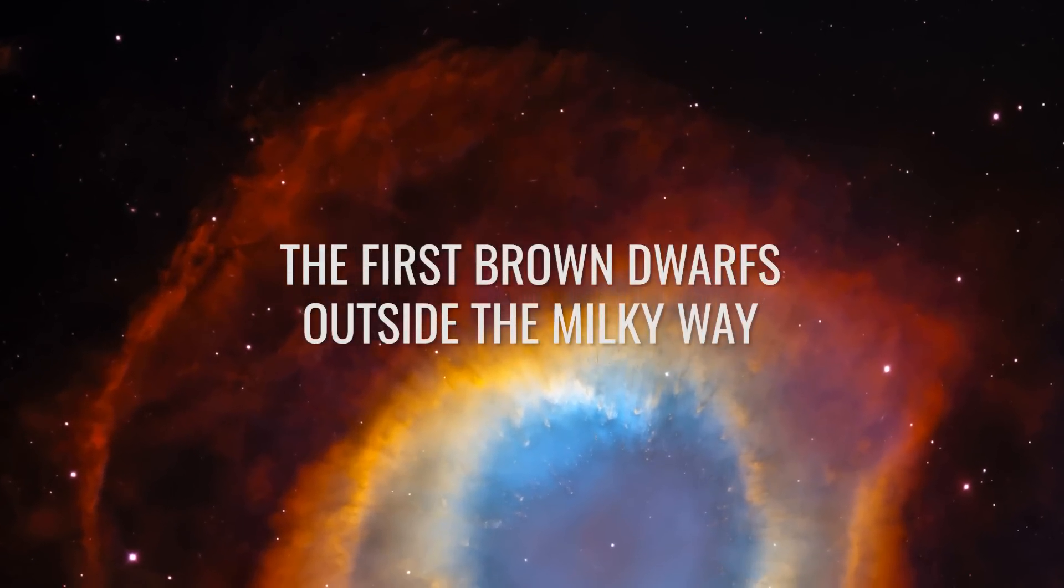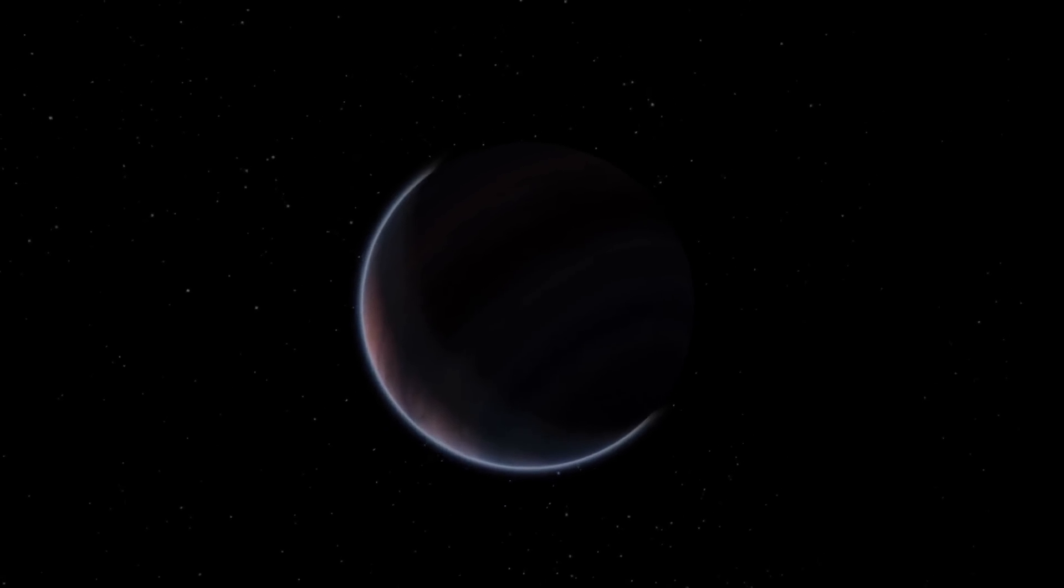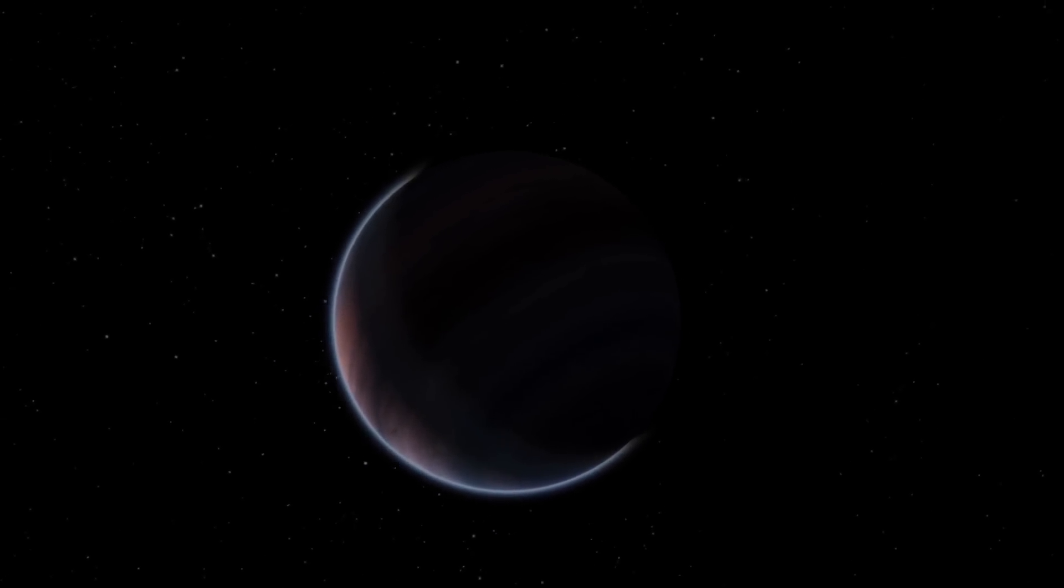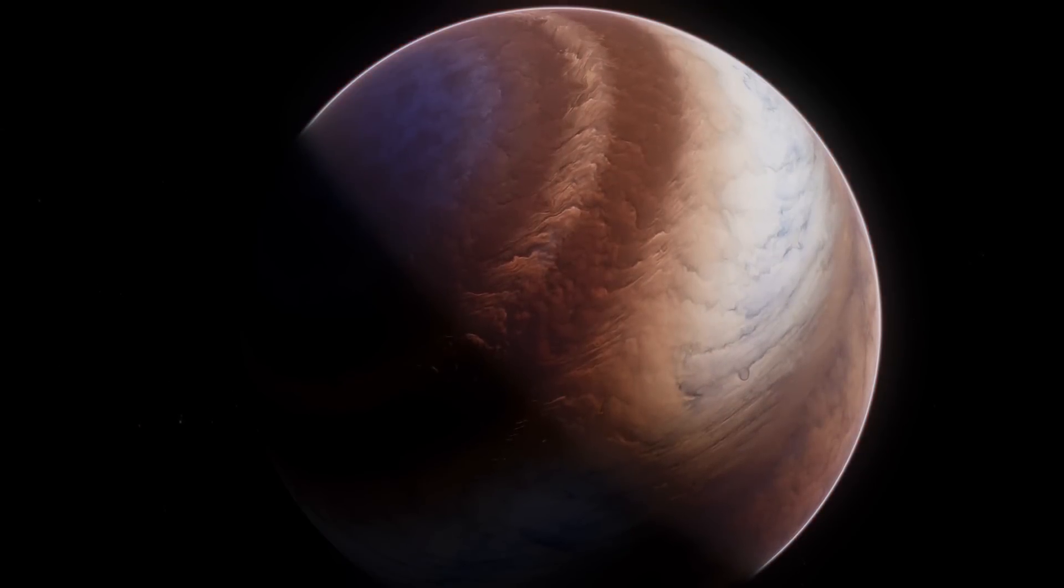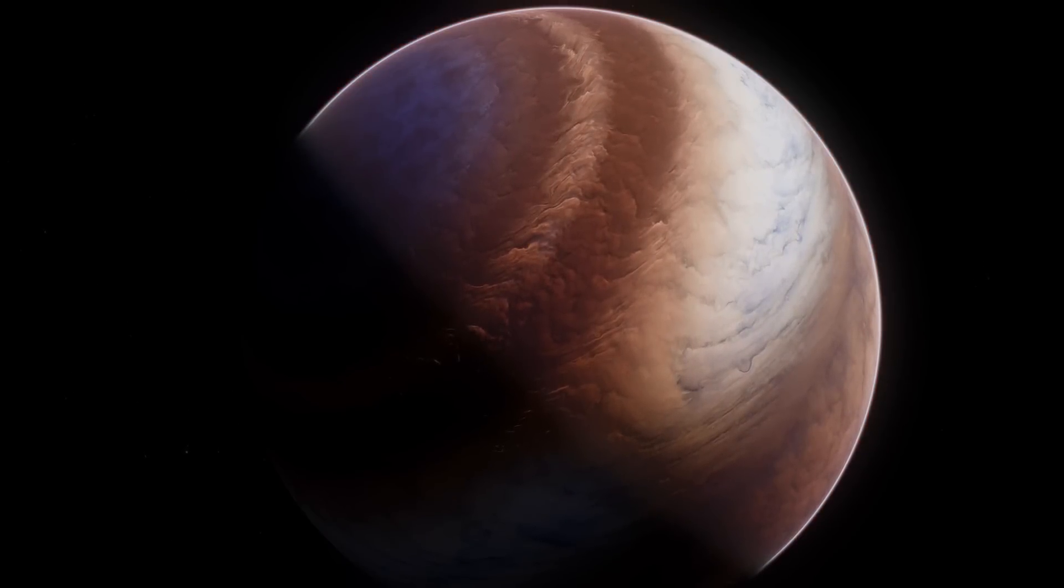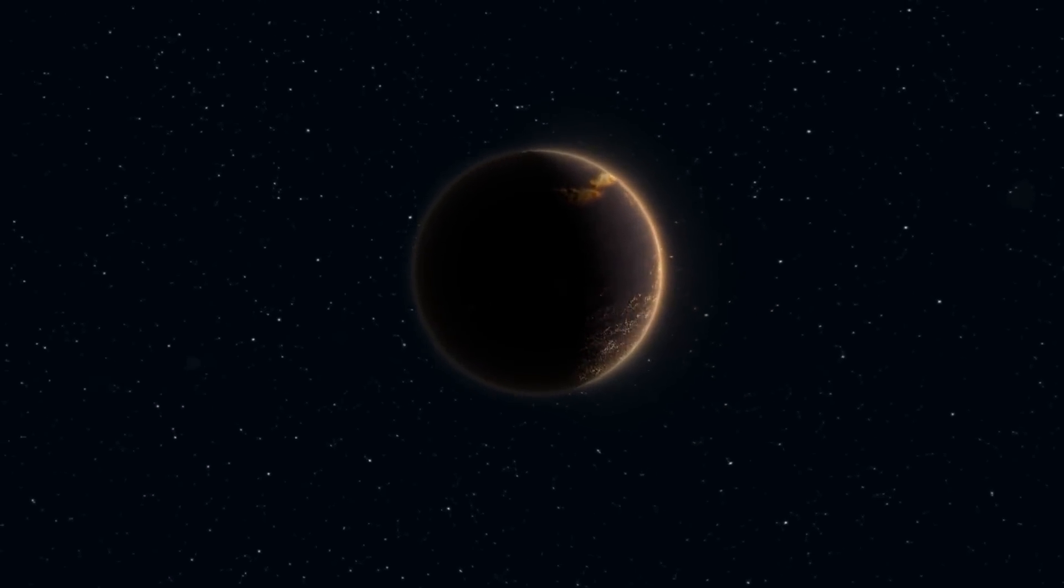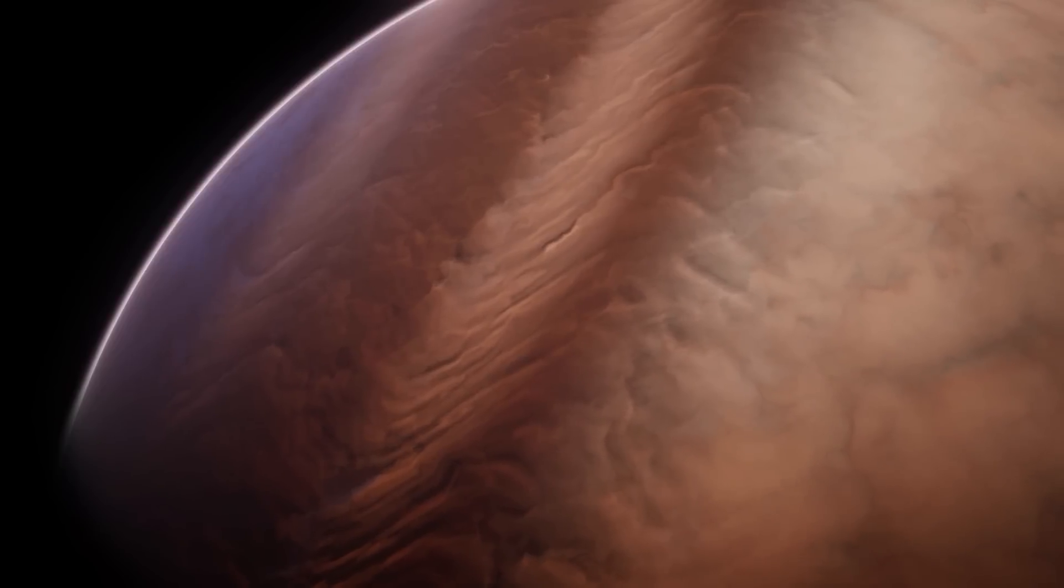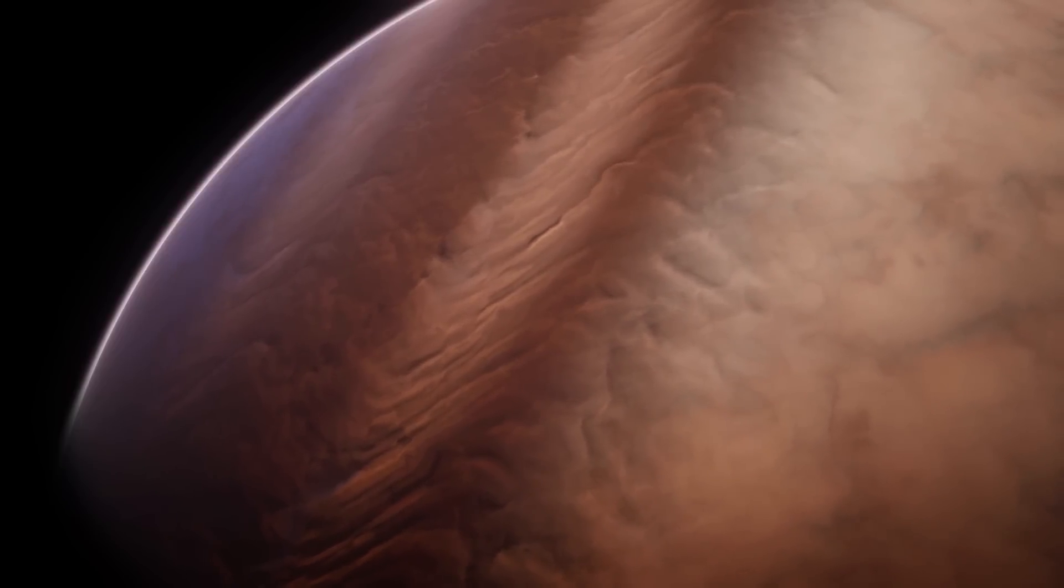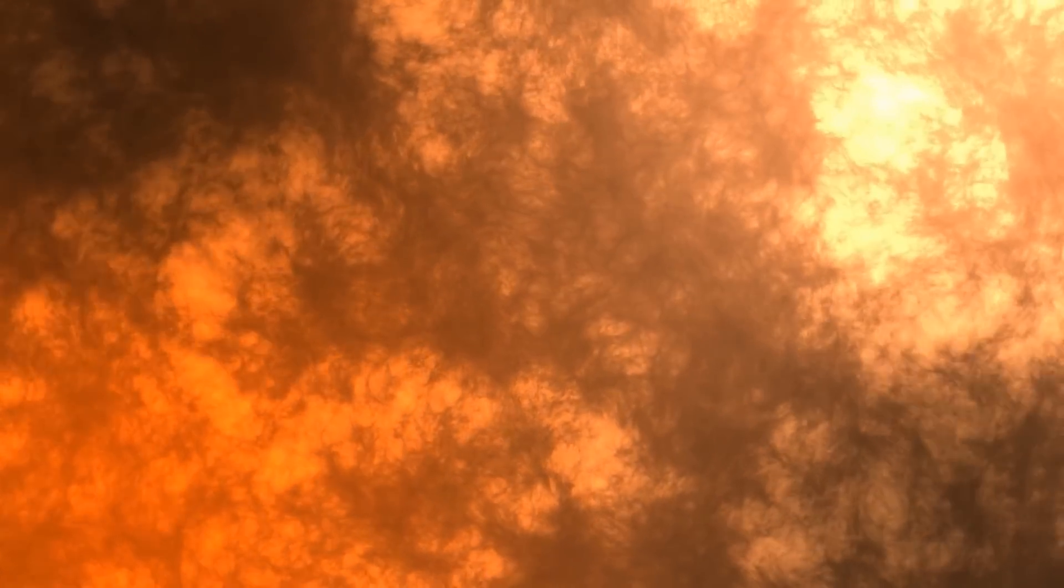The first brown dwarfs outside the Milky Way. Is it a star? Is it a gas planet? No, it's a brown dwarf. In simple terms, these objects can be described as a kind of intermediate stage between the former and the latter. Typically, brown dwarfs weigh between 13 and 75 times the mass of Jupiter. On the one hand, they are too low mass to ignite hydrogen fusion inside them, and on the other hand, they are heavy enough for deuterium fusion to begin.